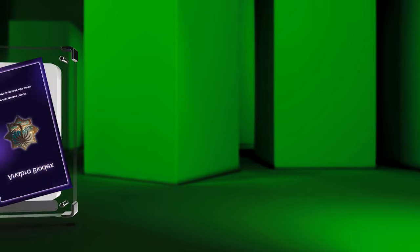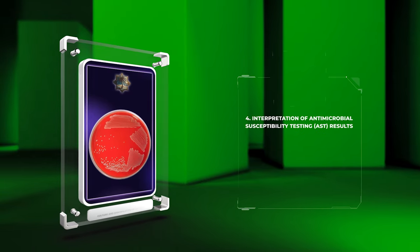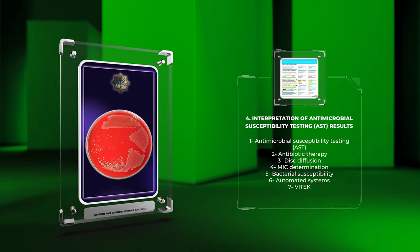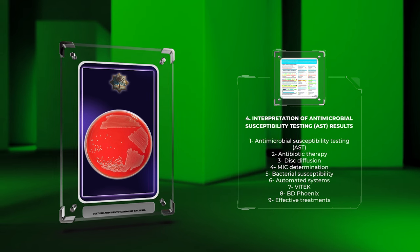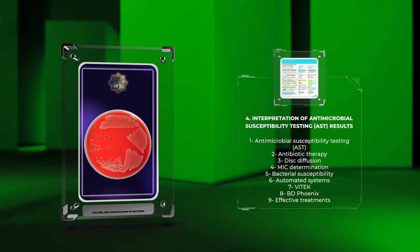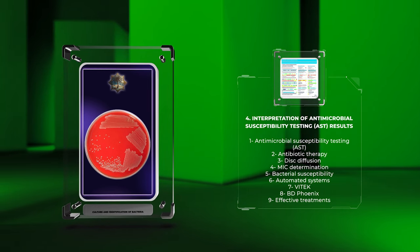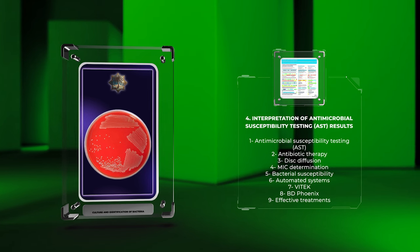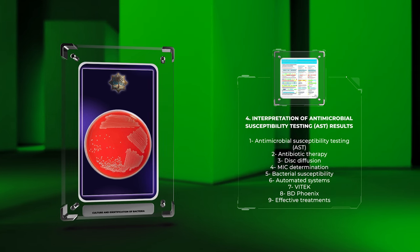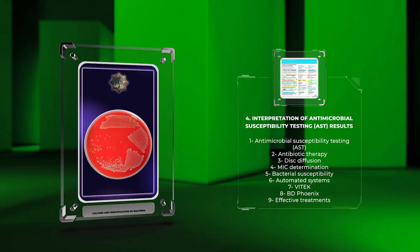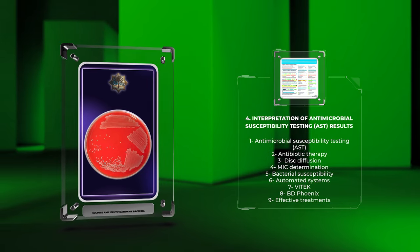Antimicrobial susceptibility testing, AST, is crucial for guiding antibiotic therapy. Disc diffusion and MIC determination are used to assess bacterial susceptibility. Automated systems like Vitek and BD Phoenix streamline the process. Understanding AST principles aids in selecting effective treatments and combating antibiotic resistance.